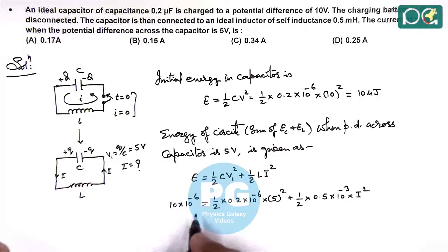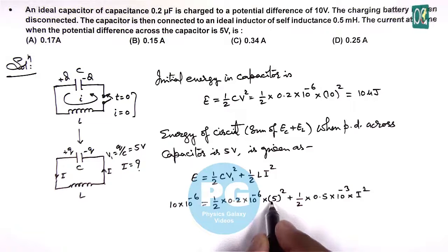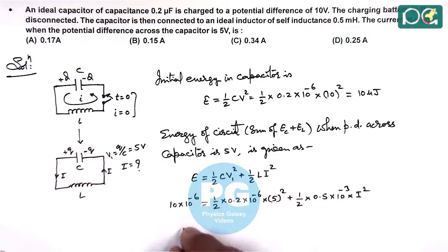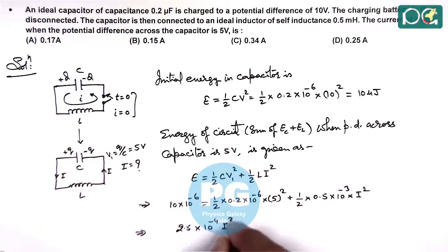Simplifying this relation, we have 2.5 multiplied by 10 to the power minus 6, which we take to the left-hand side. This gives us 2.5 multiplied by 10 to the power minus 4 I squared equals 10 minus 2.5, which is 7.5 times 10 to the power minus 6.